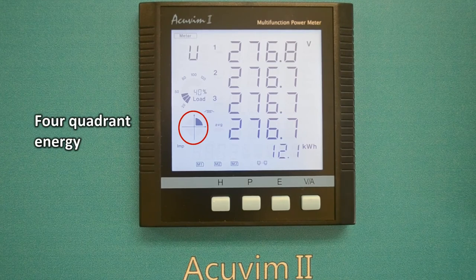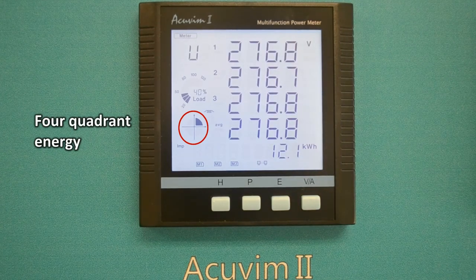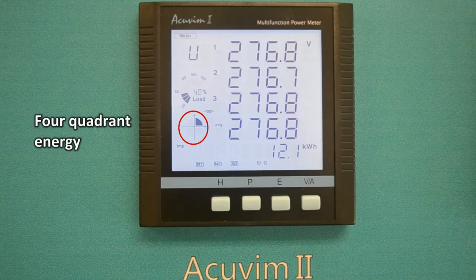The four quadrant graphic displays four quadrant energy conditions. At the moment the meter has lit the first quadrant, meaning the power factor is lagging.